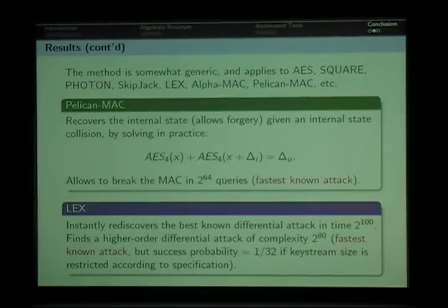So because the tools are just equation solvers, they can be applied not only to the AES itself, but to things that look like the AES. For instance, they could be applied to PELICAN-MAC. In PELICAN-MAC, essentially four AES rounds are applied to a new state—four keyless AES rounds. And so the tool was able to find equations, differential equations, to find x such that it follows a certain differential. And it found a procedure that solved this problem in practice. This allows to break the MAC in 2^64 queries, and it is, as far as I know, the fastest attack that has been simultaneously discovered by other people. And on LEX, LEX is also a stream cipher that uses AES rounds inside. And so the tool could rediscover easily the best known attack. And also with some user input found a higher-order differential attack that's faster.